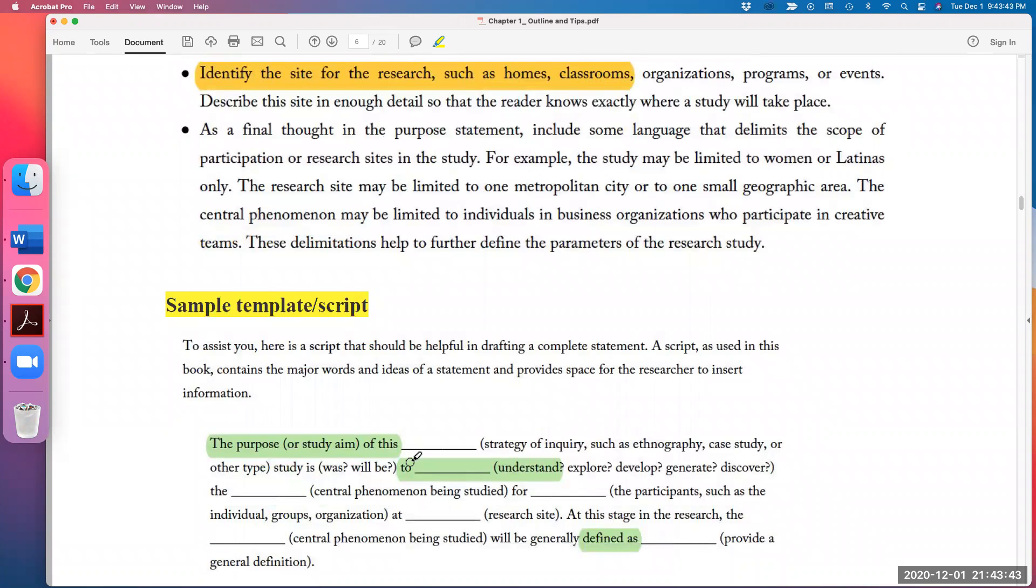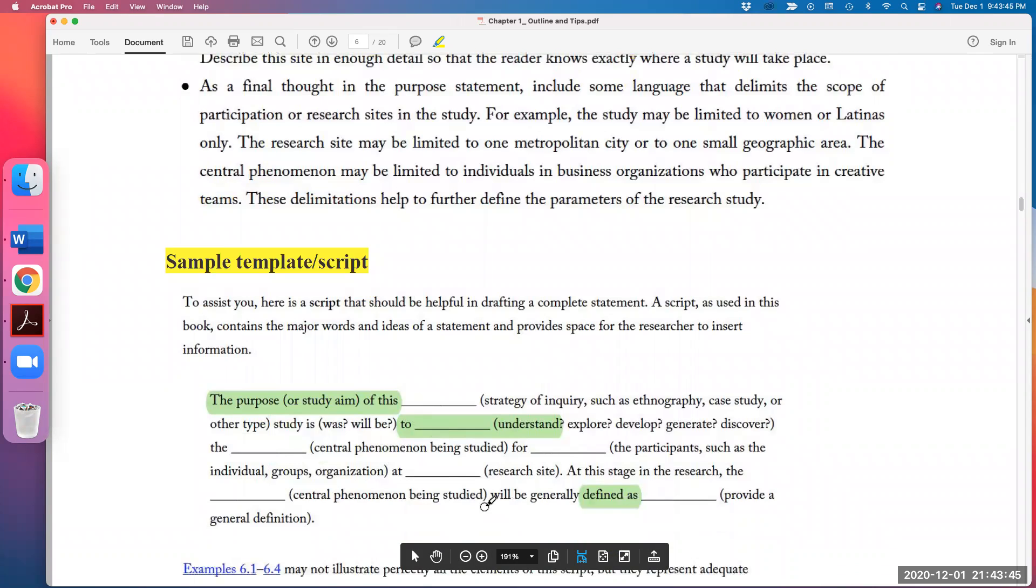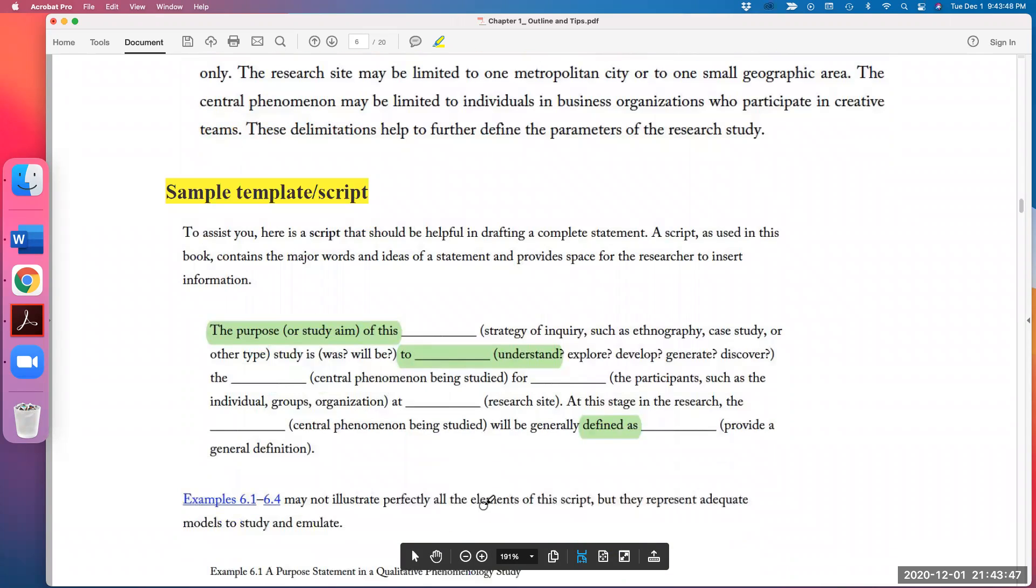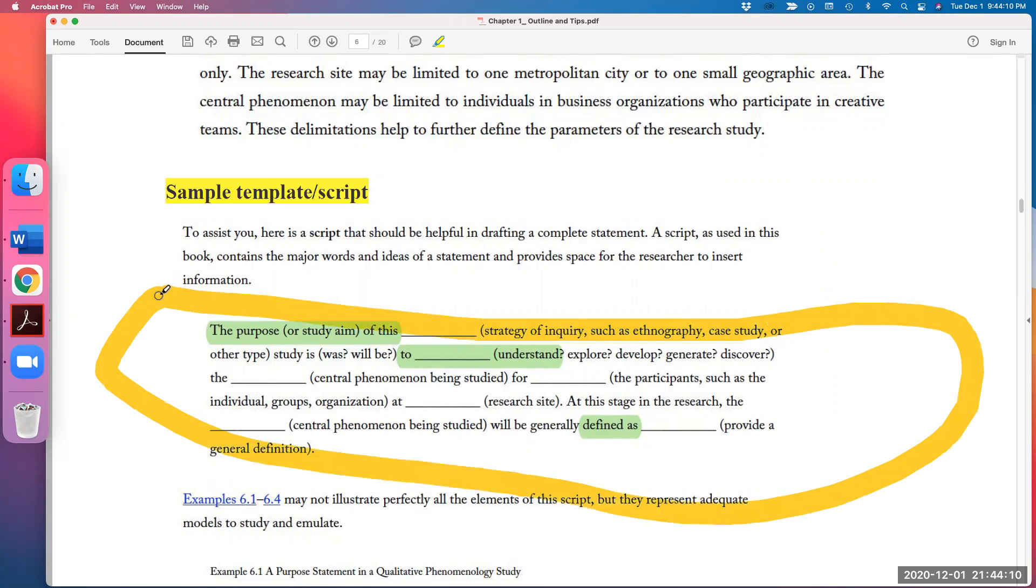So here is a script. I think for beginners while writing an article or even dissertation, you can use this one. The template here is really nice. The purpose of this case study is to explore the experience of doctoral students in the program or from one doctoral program from Midwestern State University. So probably you can use this nice template for your study.